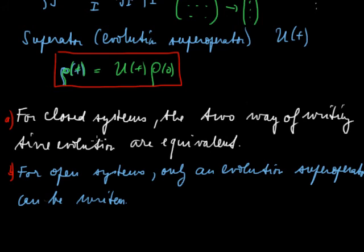The same thing is with the super operators. For closed systems, super operator and operator approach describes or holds the same information. Whereas for open quantum systems, only the super operator, let's say evolution super operator, can be written. The normal operator, the evolution operator does not have any meaning, doesn't have any sense, cannot be written for an open quantum system. So that's all.